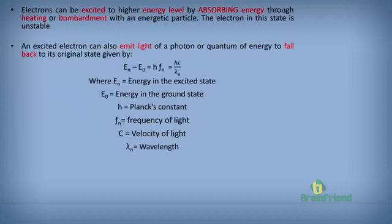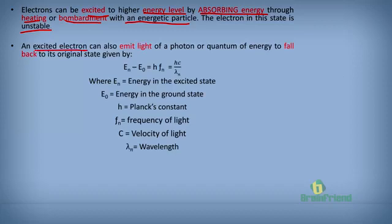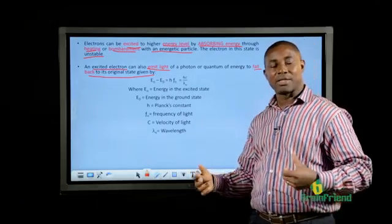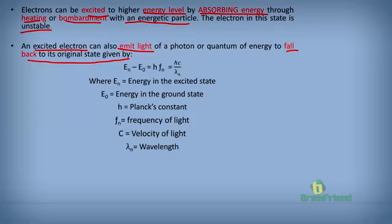Electrons can be excited to a higher energy level by absorbing energy through heating or bombardment with another energetic particle. The electron in this state becomes unstable — it acquires energy and becomes unstable. An excited electron can also emit a photon or quantum of energy to fall back to its original state. It receives energy by heating or bombardment, gains higher energy, but when it emits light, it loses some or all of that energy and falls back to a lower energy level or to the ground state.